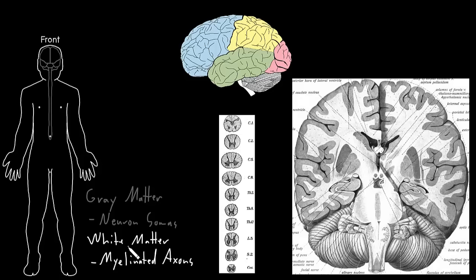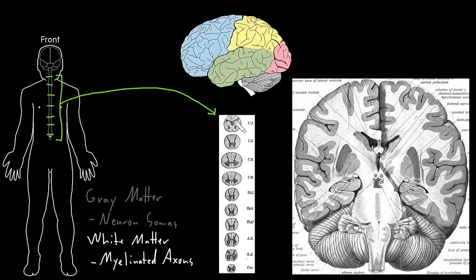Now the distribution of gray matter and white matter is a little different between the spinal cord and the brain. If we look first at the spinal cord, here we have a nice illustration of different sections of the spinal cord. These drawings represent different levels of the spinal cord — like if we made little sections, cutting a loaf of bread from top to bottom and looking down at those sections. What we see in the spinal cord is that most of the gray matter is on the inside, in this kind of H-shape or butterfly shape, and the white matter of the spinal cord is mostly on the outside.